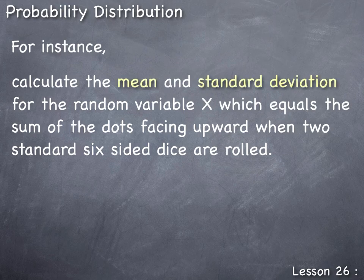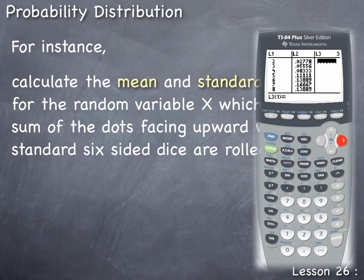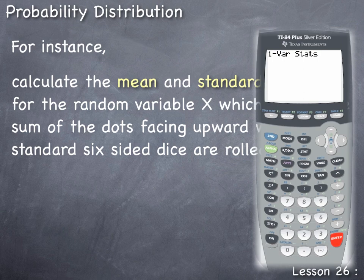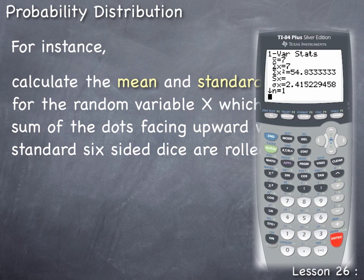For example, calculate the mean and standard deviation for the random variable X — the sum of the dots facing upward when two standard six-sided dice are rolled — using the TI-84. With L1 containing X values and L2 containing P(X), press STAT, arrow right to CALC, press ENTER to select 1-Var Stats, then enter L1 (2nd, 1), comma, L2 (2nd, 2), and press ENTER to get the calculated mean and standard deviation.